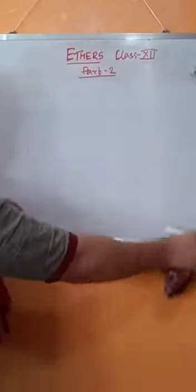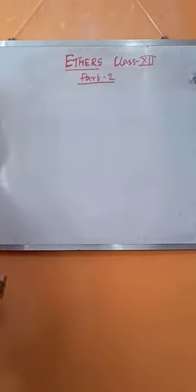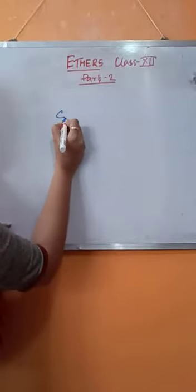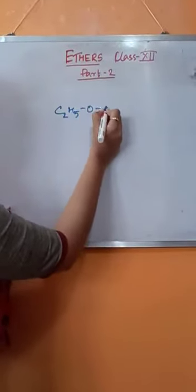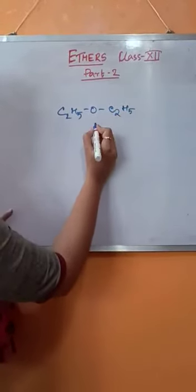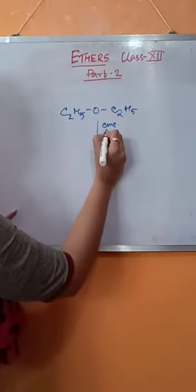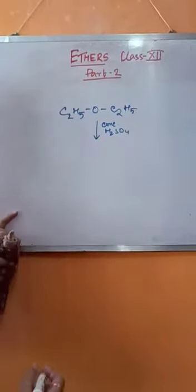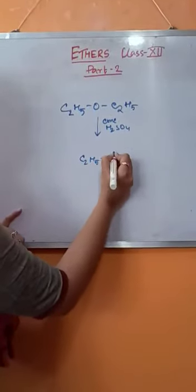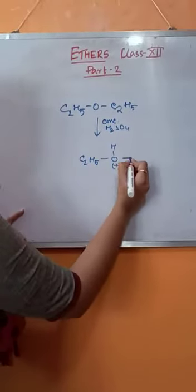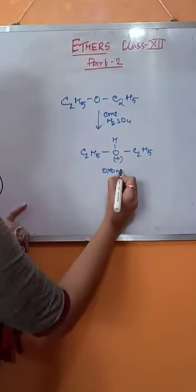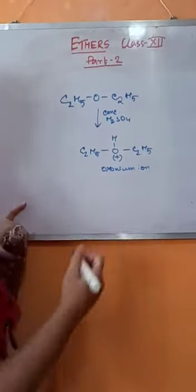The next reaction is formation of oxonium salts. Ethers, when treated with concentrated sulfuric acid in cold condition, will result in the formation of oxonium salts. And this is the oxonium ion.